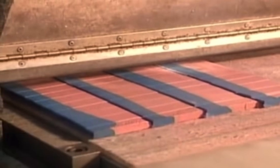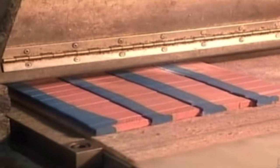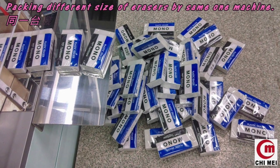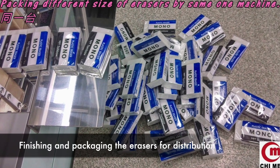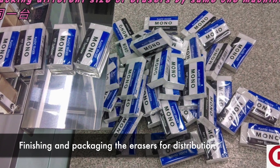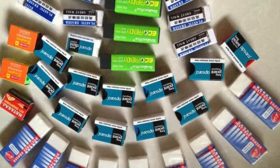The final step in the manufacturing process involves finishing and packaging the erasers for distribution. This includes trimming any excess material, inspecting for defects, and applying branding or labeling.